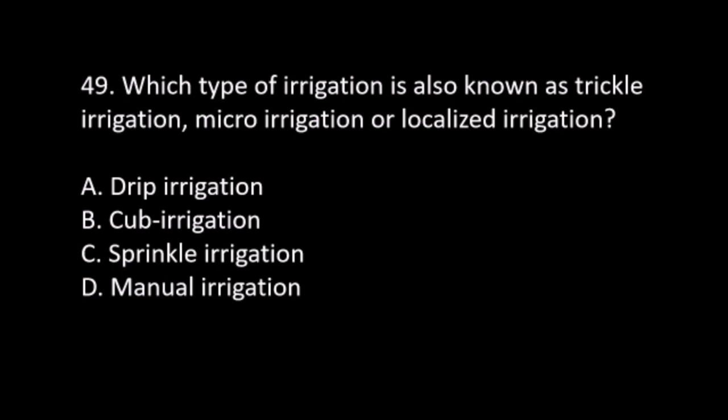Number 49. Which type of irrigation is also known as trickle irrigation, micro-irrigation, or localized irrigation? A. Drip irrigation. B. Sub irrigation. C. Sprinkler irrigation. D. Manual irrigation. The answer is A. Drip irrigation.